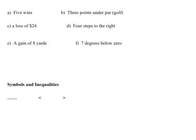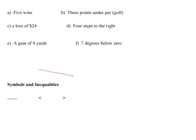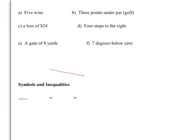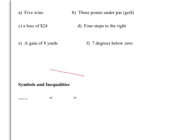A couple other things I want you to know. Numbers can actually be expressed by words. And I want us to all feel comfortable in writing words as numbers. Five wins can be expressed as plus five, or just five. Three points under par would be negative three, and par is in golf. A loss of $24 would be minus 24.